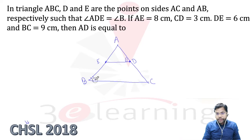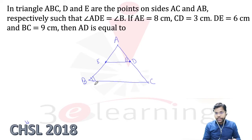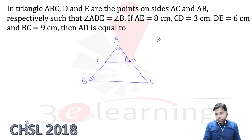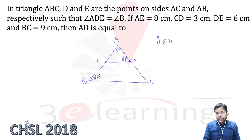Angle ADE equals angle B. If you have these two angles together — theta and 180 minus theta — it means it's a case of a cyclic quadrilateral. And it is also a case of similarity, because angle A is common to both triangles. So we can write a similarity. Triangle AED is similar to triangle ABC, matching angle-wise.